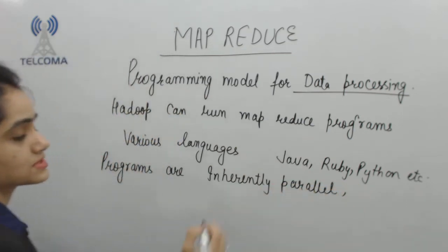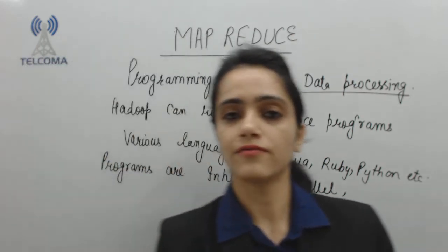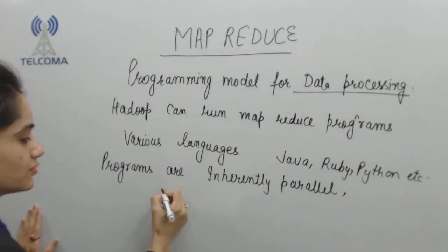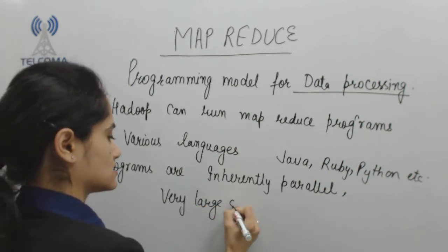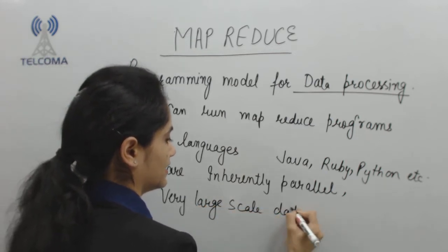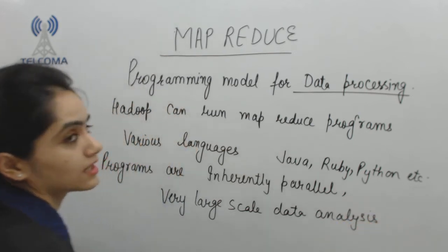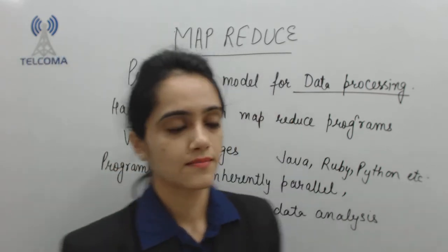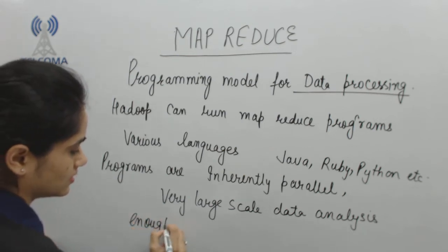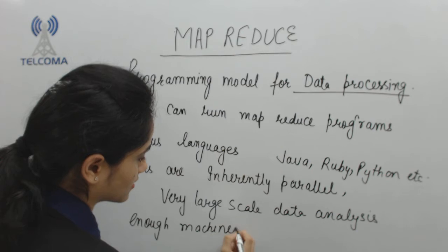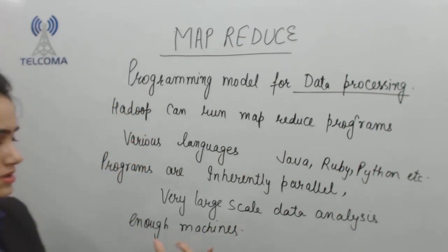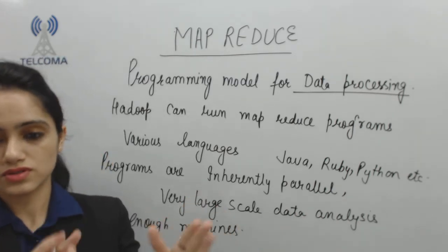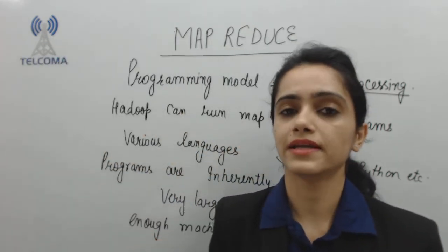Because programs are inherently parallel, they suit very large-scale data analysis — they run in parallel. With enough machines at their disposal, Hadoop creates a cluster of commodity hardware where processing is also parallel, making data processing fast and time-efficient.